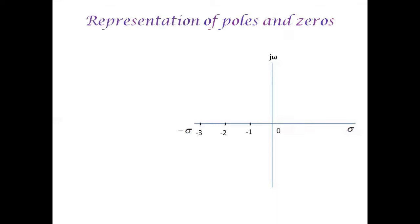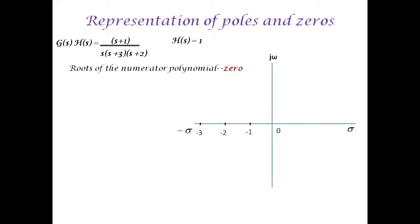Before starting with the derivation, I would like to explain a few basic concepts related to the representation of poles and zeros. For a given open loop transfer function G(s)·H(s) equal to (s+1) divided by s·(s+3)·(s+2), where H(s)=1, given a unity feedback. The roots of the numerator polynomial are called zeros, represented by a small circle, and the roots of the denominator polynomial are called poles, represented by a cross mark.